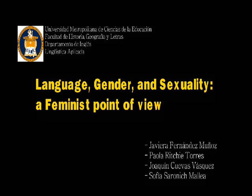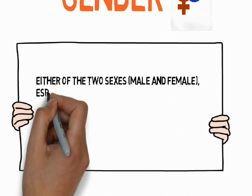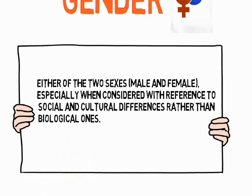The source we will use in order to define the concepts mentioned is the Oxford Dictionary. According to the Oxford Dictionary, gender is either of the two sexes, male and female, especially when considered with reference to social and cultural differences rather than biological ones. The term is also used more broadly to denote a range of identities that do not correspond to established ideas of male and female.